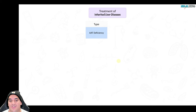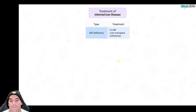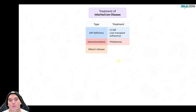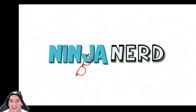For treatment: in alpha-1 antitrypsin deficiency, give IV alpha-1 antitrypsin protein replacement, and some patients may require a liver transplant if disease is advanced. For hemochromatosis, the primary treatment is phlebotomy — removing excess iron from the bloodstream so it doesn't further damage tissues. Iron chelating agents can also be used, but phlebotomy is first line. For Wilson's disease, it's about chelating the copper — penicillamine is commonly used as first-line therapy to bind and remove copper from the body.